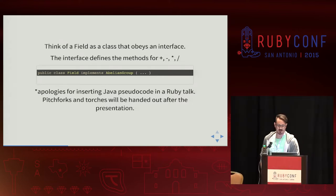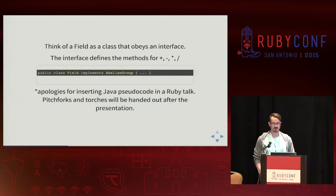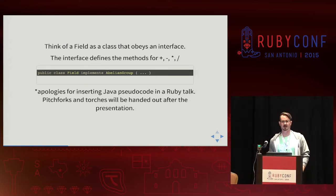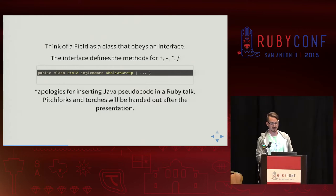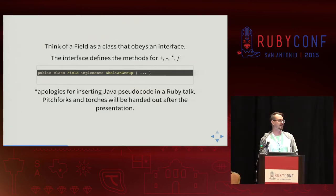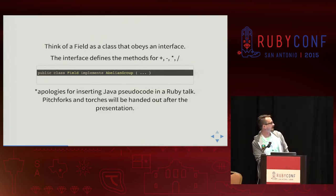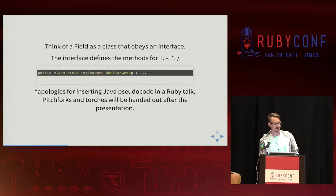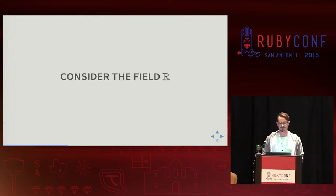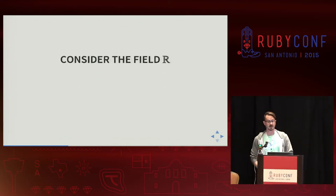I apologize for inserting Java pseudocode into this talk — there's no true interface-style construct in Ruby, so Java makes sense here. Anyway, if we consider the field of real numbers, a real number can be rational or irrational, positive, negative, or zero, and it implements those methods of multiplication, subtraction, division, and addition.